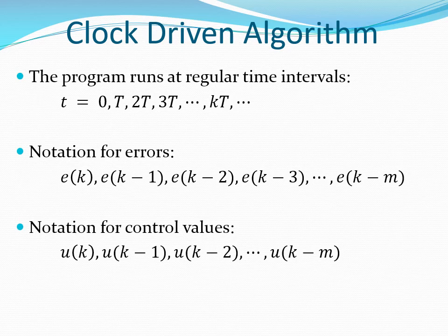In a clock driven algorithm, the program runs at regular intervals, that is at intervals 0, t, 2t, 3t, 4t, and so on until infinity. T is the time between successive runs of the program, and it is equal for all the intervals.